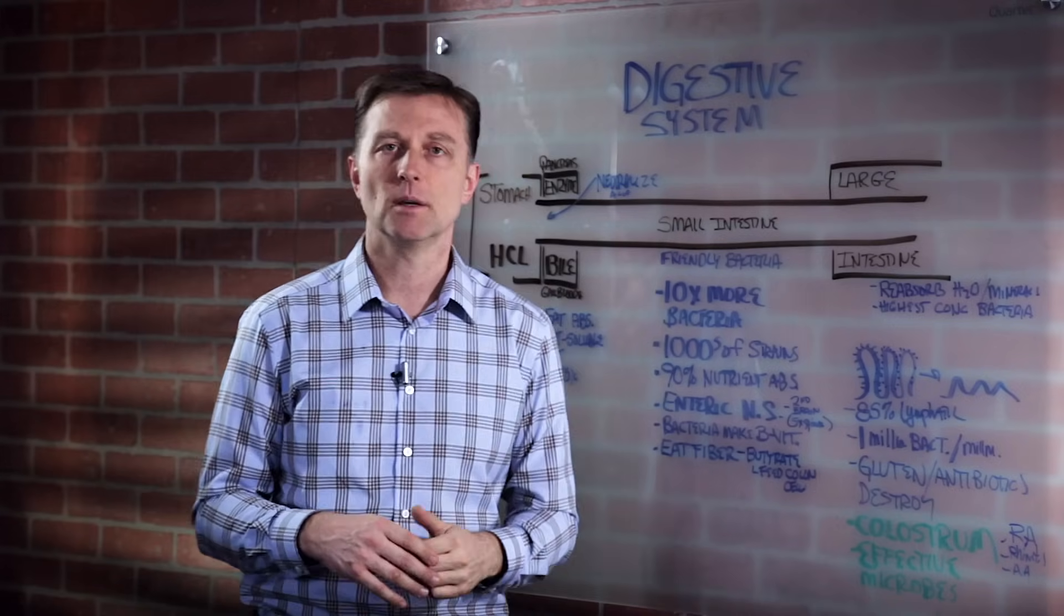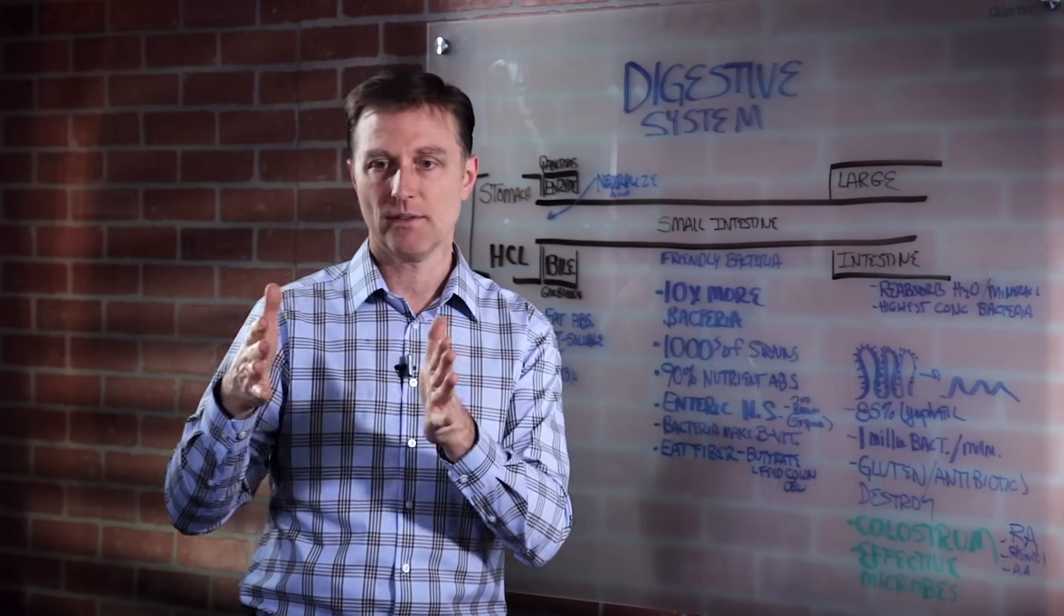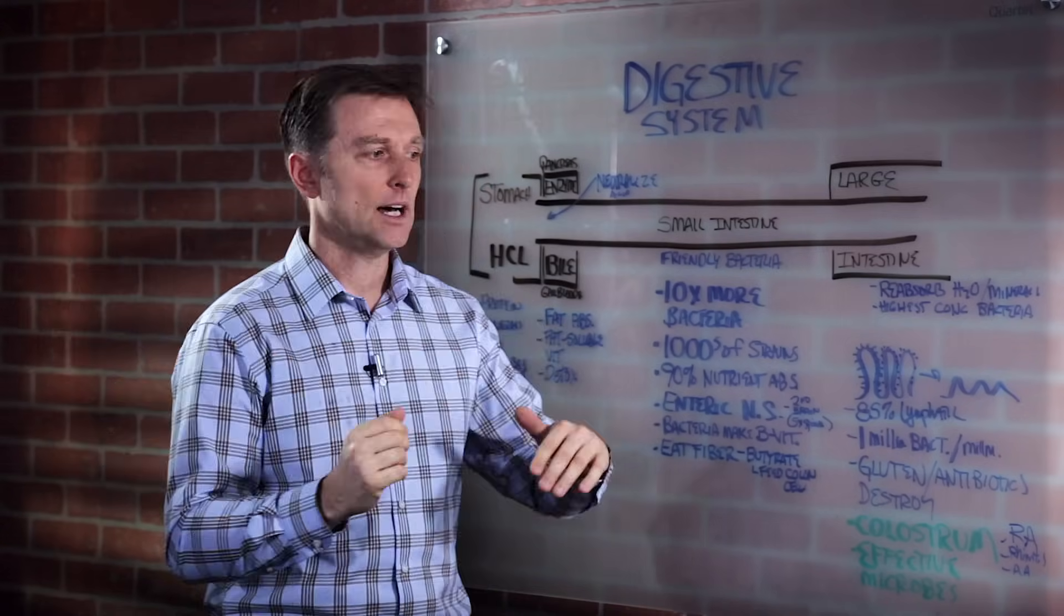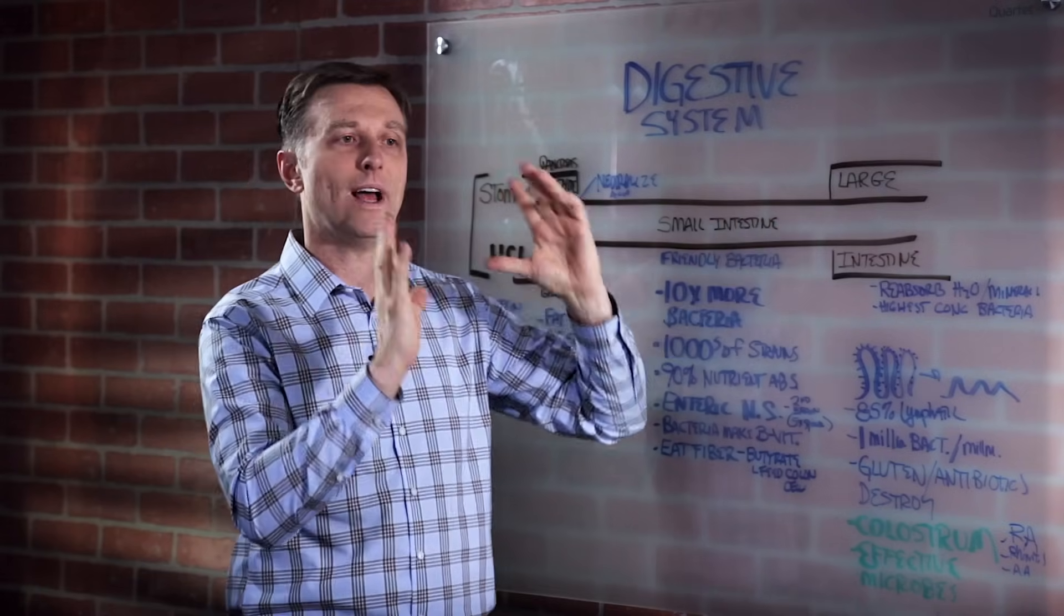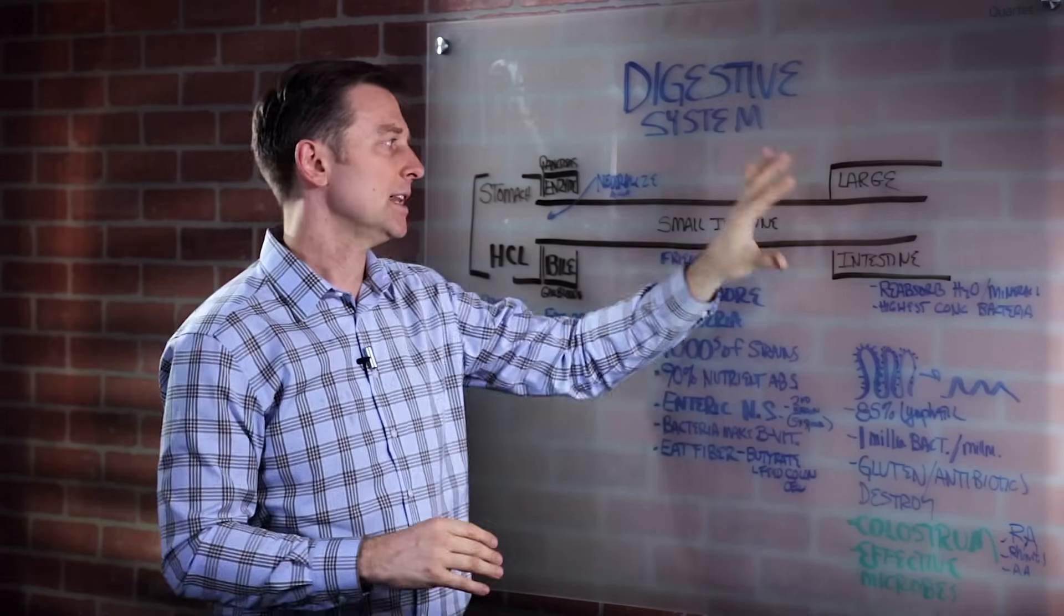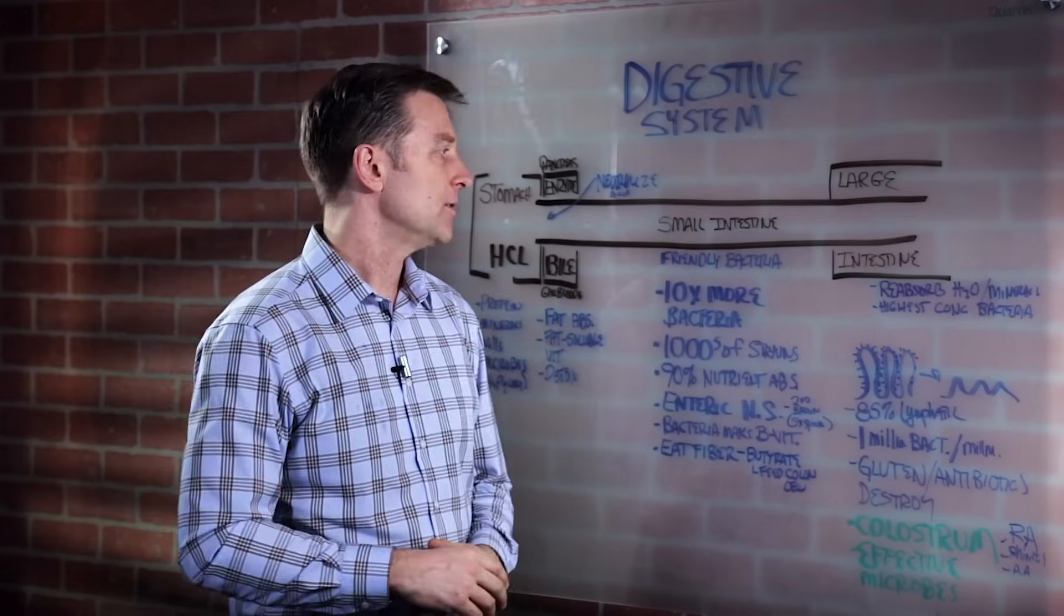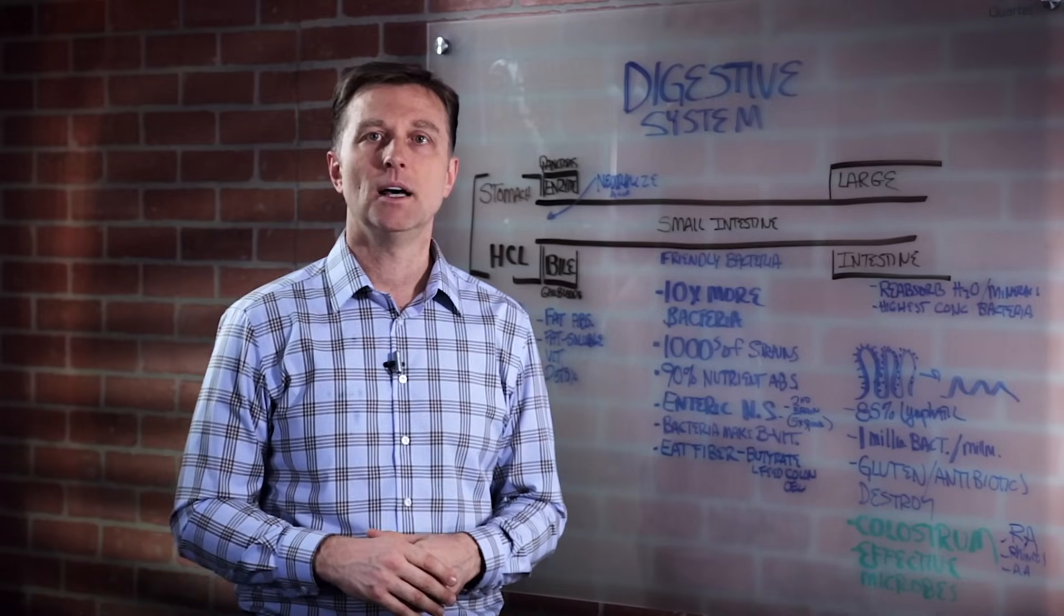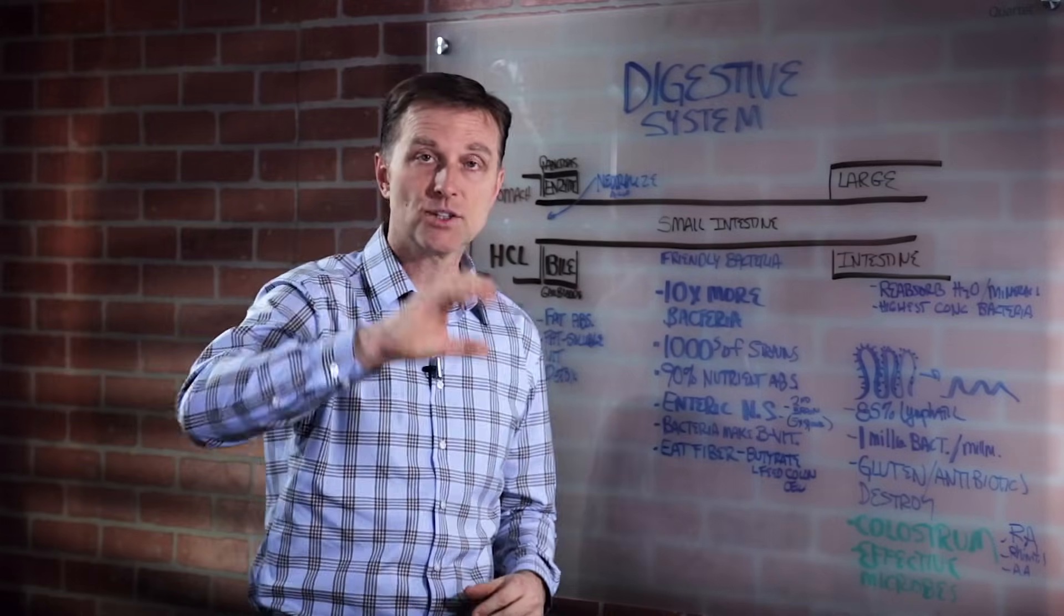So we have 90% of the nutrition absorption occurs at this level. Another thing that's interesting about this is that you have something called the enteric nervous system. So you have the sympathetic, which is the flight or fight. That's like the stress nervous system. And then we have the parasympathetic, which is part of the rest and digest, which controls a lot of this too. That's kind of like the opposite of the stress nervous system. But then you have the enteric, which controls like all this intestines and the peristalsis, the pumping action and the whole thing.